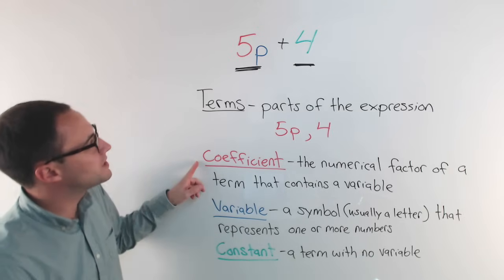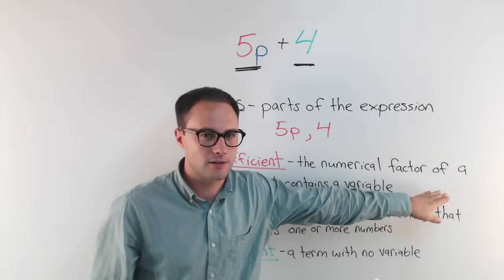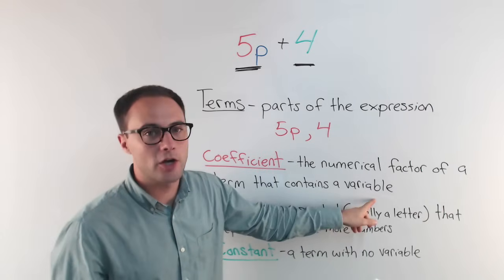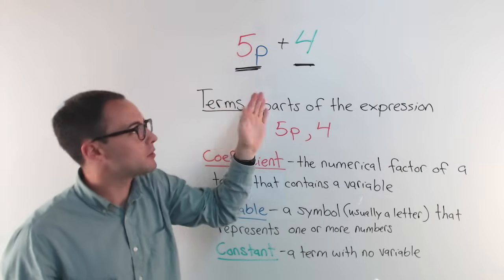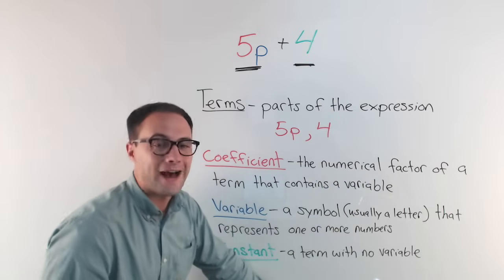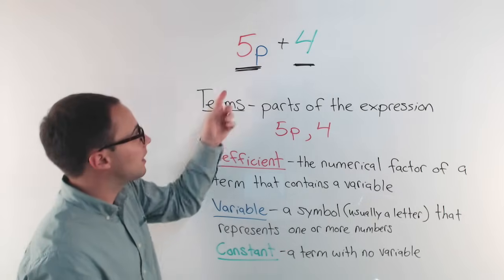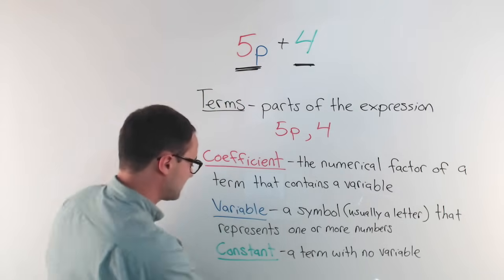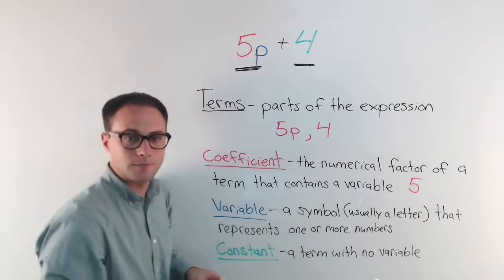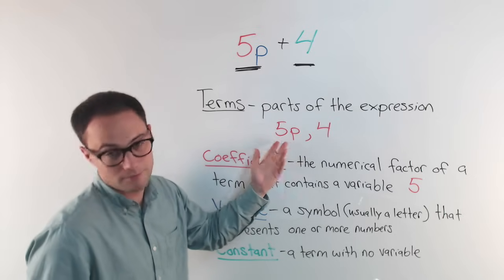Next, the coefficient — and you can see that I color-coordinated here. A coefficient is the numerical factor of a term that contains a variable. The only term here that contains a variable is 5p. The coefficient is the numerical factor — basically, the number part of the term. So in this expression, the coefficient is 5. You can think of it as just the number in front of the variable.